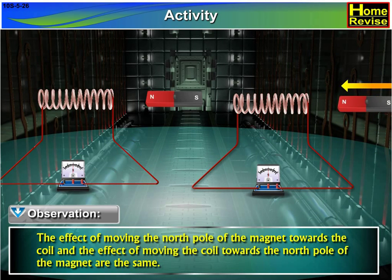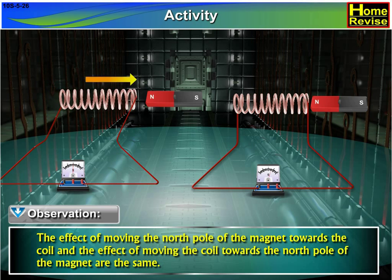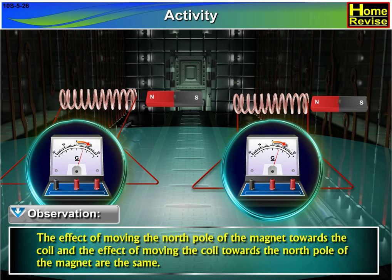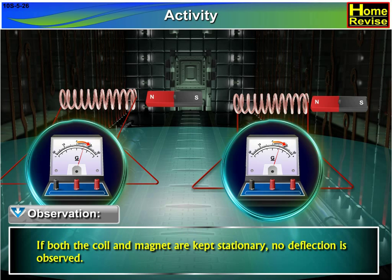The effect of moving the north pole of the magnet towards the coil and the effect of moving the coil towards the north pole of the magnet are the same. If both the coil and magnet are kept stationary, no deflection is observed.